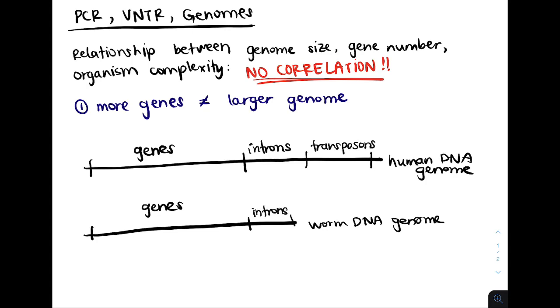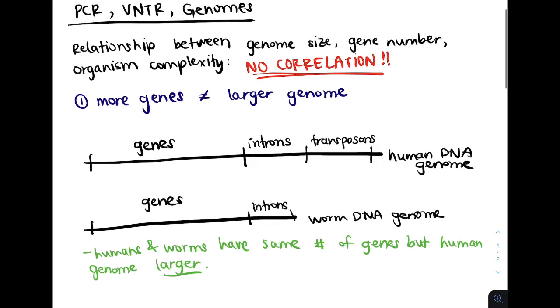As a result, even though the worm has the same number of genes as a human, the size of the genomes are different. The genome of a worm is shorter because it has less introns, and a human DNA genome is much longer because it has other non-coding regions.